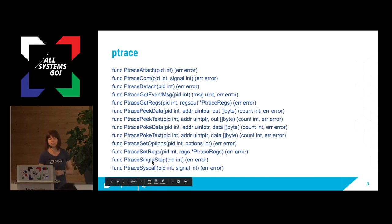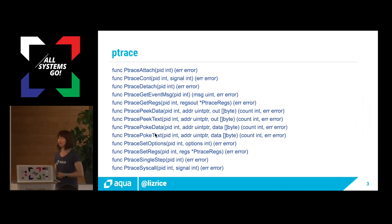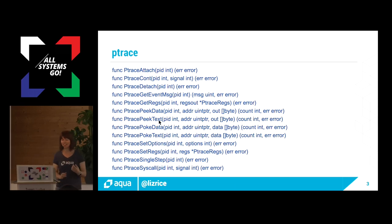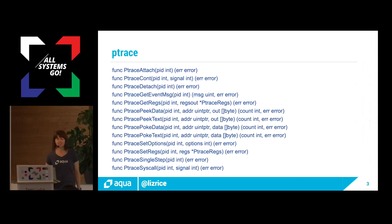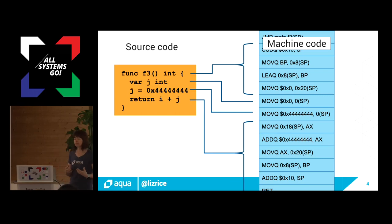If you're old enough to remember things like the Commodore 64, I remember peeking and poking data — that's to do with writing data and reading it from memory. So that gives me a pretty good idea of the kind of things I can do with ptrace. Before we start writing a debugger, let's talk about how executables work — I'm sure lots of you know this, but let's make sure we're all on the same page.